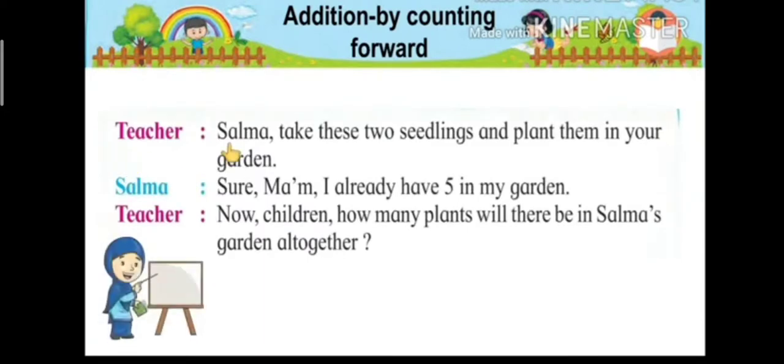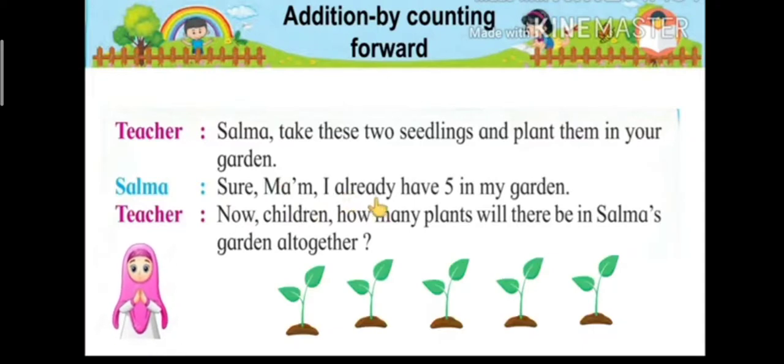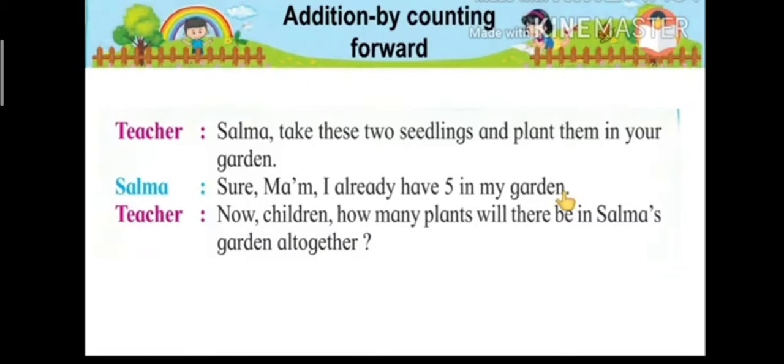Teacher says, Salma, take these two seedlings and plant them in your garden. Then Salma says, Sure ma'am, I already have five in my garden. Salma said she already has five seedlings, and teacher gave her how many seedlings? Two.